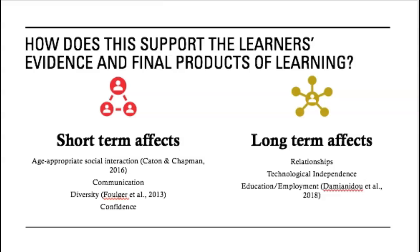Some long-term effects: build relationships and maintain friendships with their peers. Technological independence will empower learners to become a more active part of their community with other people in their lives. It can support their ability to work and receive an education, according to Damian Dow and colleagues in 2018. They discussed technology competency and how it supports individuals with disabilities to continue their education and/or maintain a job in the future. Technology is many individuals' ticket to independence, and social media is a great way for them to become independent technologically and socially.